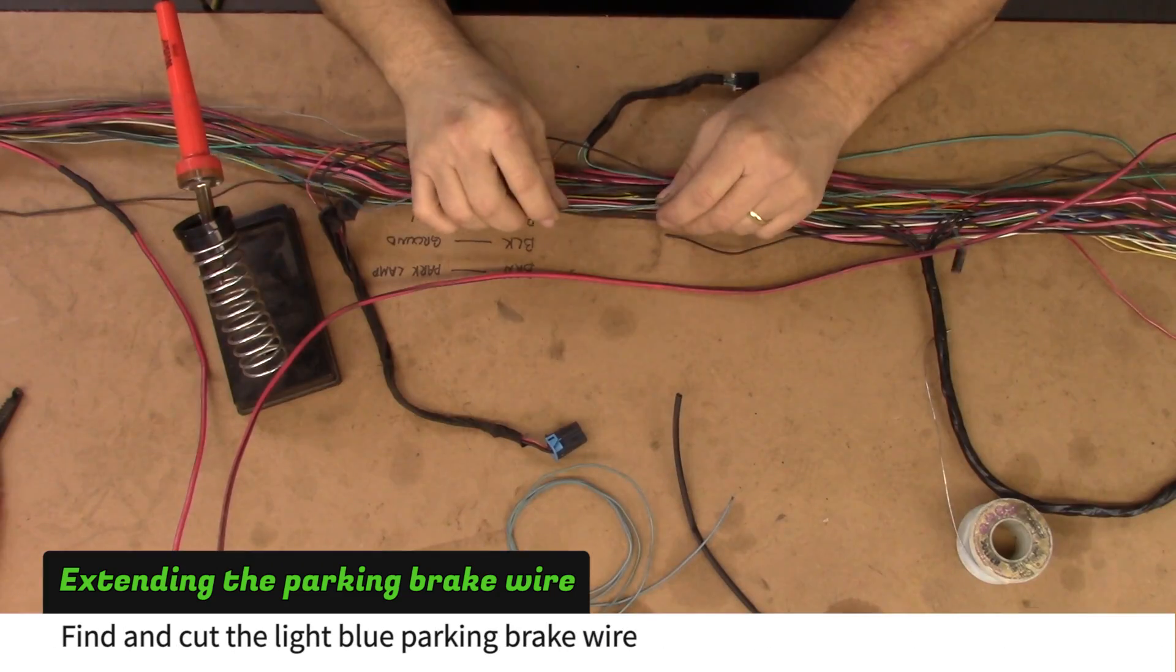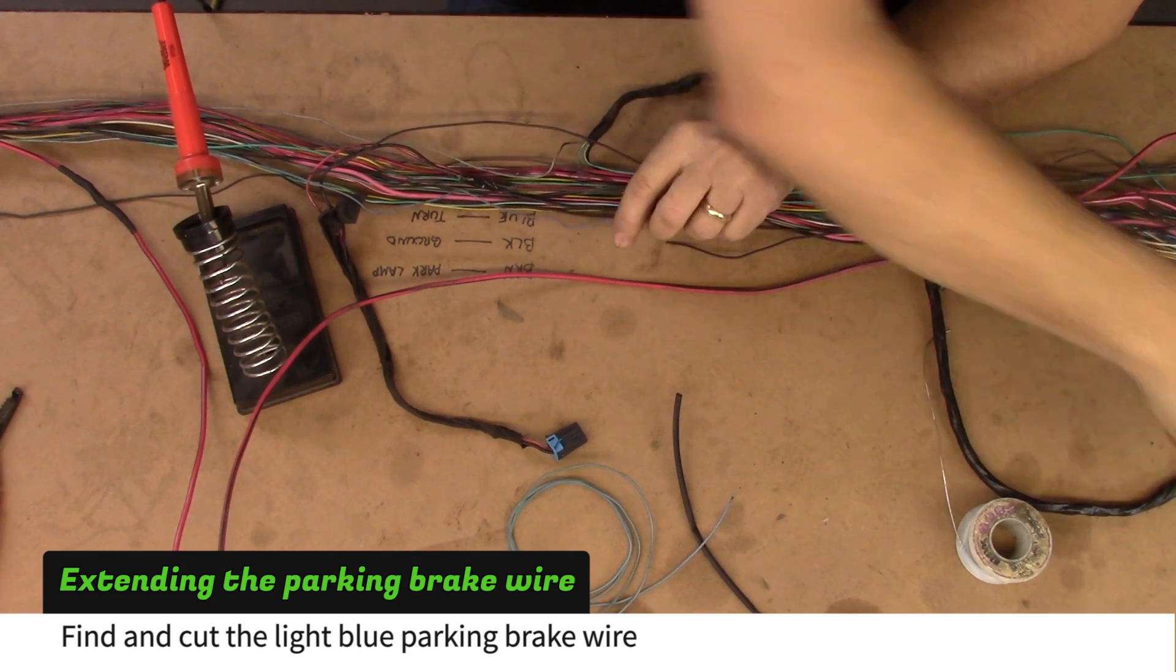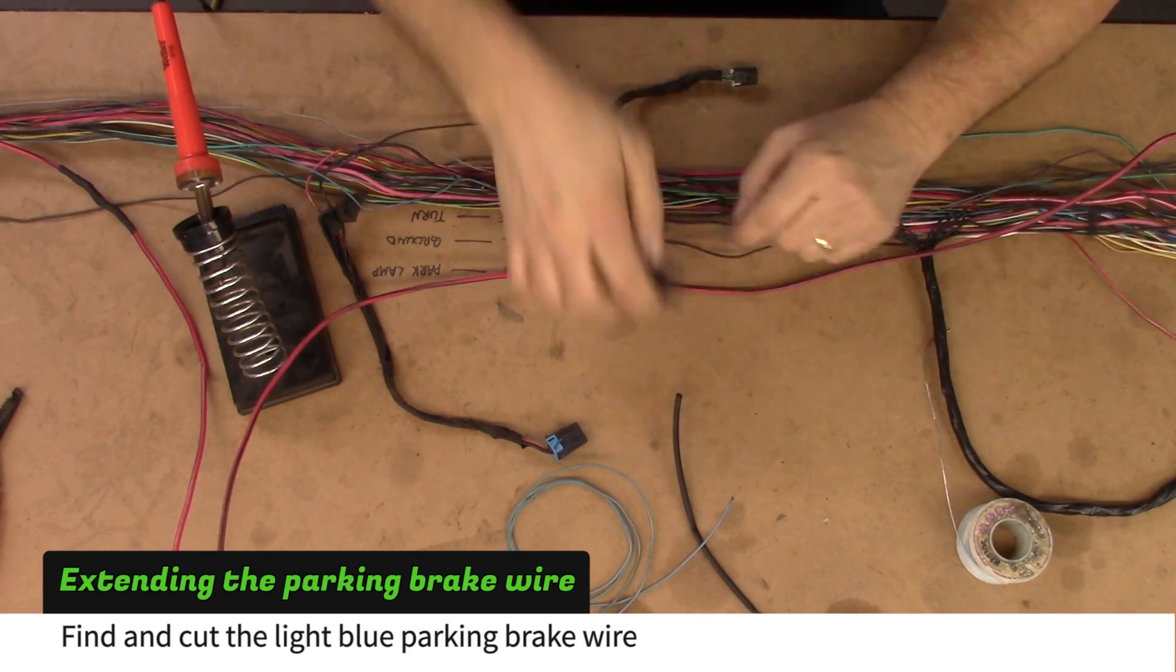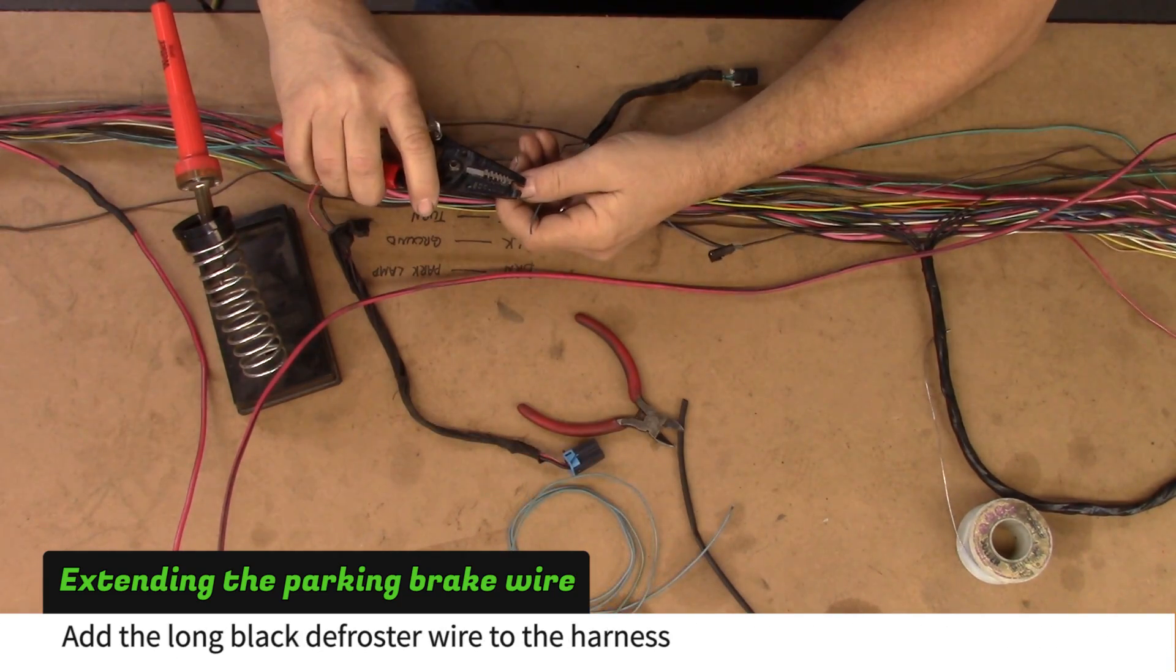Find and cut the light blue parking brake wire. It has a small black connector on the end. Extend this wire by 48 inches.